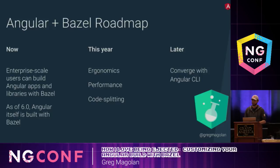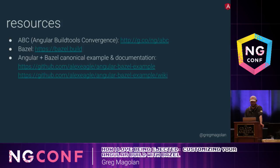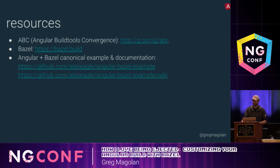We're going to be working on performance, which means faster builds, and we'll be adding features like code splitting. In the future, we'd like to converge Angular, Bazel, and the CLI together so that you can get the benefits of Bazel when you use the CLI under the hood. Here are some links you can visit to learn more. The first link is a catch-all for the ABC project — in there you'll find links to other talks, videos, and documentation. The second link is to Bazel itself, where you can find out how to install Bazel and find documentation. The last two links are for the Angular Bazel example I showed in the demo, where you can see all the rules I've talked about today in use and try them out.